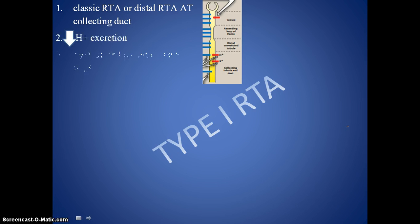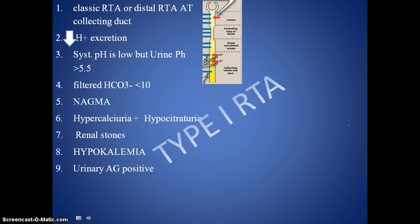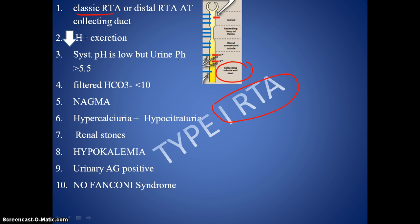Let us start with type 1 RTA. There are 10 important points to remember. As the name suggests, type 1 is the classical form. The defect is in the distal part, that is, in the collecting duct. The defect is decreased H+ excretion. In the collecting duct, there is always H+ exchange to maintain urine pH and body pH. When H+ is not being sent out, it is retained within the body, causing increased H+ and resulting in acidosis. Since H+ is not going into the urine, the urine becomes less acidic. The pH is usually greater than 5.5 with systemic acidosis. The defect is only in the collecting duct, whereas the proximal tubule is functioning well.